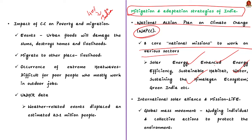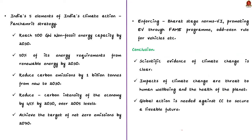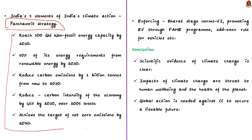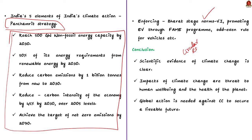Second, India took various initiatives like the International Solar Alliance and Mission LiFE — a global mass movement that aims to nudge individual and collective action to protect the environment. Third, India is regularly meeting its INDC targets, and in a recent COP, India presented five elements of India's climate action popularly known as the Panchamurti strategy. Fourth, India is a pioneer in reducing fossil fuel emissions — taking steps like enforcing Bharat Standard Norm 4, promoting EVs through the FAME program, and implementing odd-even rules for vehicles.